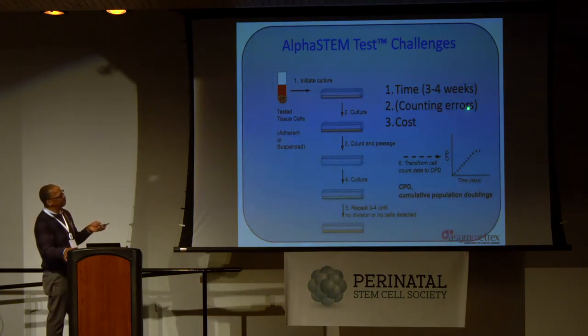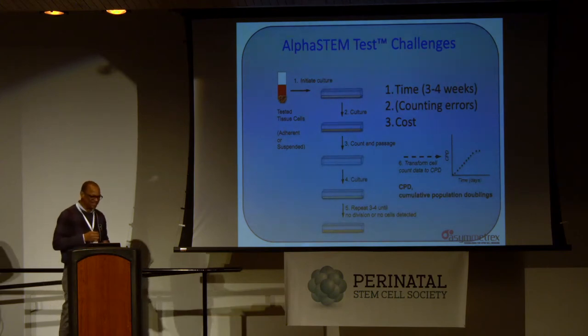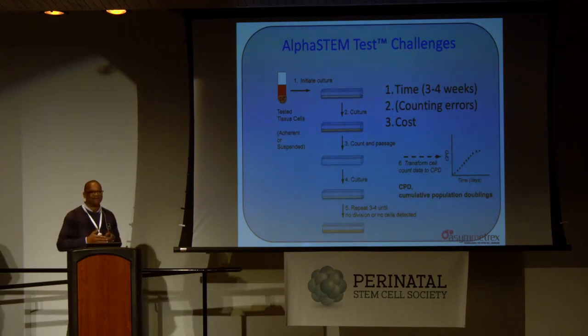There are also counting errors — I put this in parenthesis not because we make errors, but because we have relationships with academic groups where they do all of the serial analysis, send us the data, and we do the analysis for them, currently in collaborations at no charge. The problem is that's a lot of counting over time and errors get made, so it's error-prone. And then it's expensive because of all the cell culture — even fetal calf serum is expensive, but purified growth factors are astronomical.